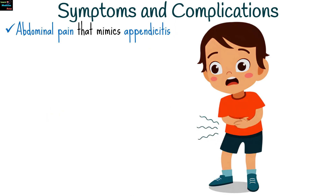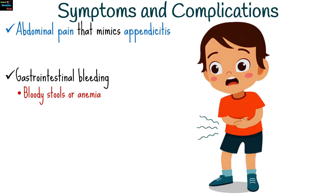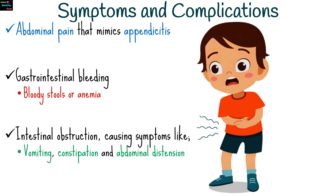While most people with Meckel's diverticulum remain asymptomatic, those who do develop symptoms might experience abdominal pain, which can mimic appendicitis; gastrointestinal bleeding, often leading to bloody stools or anemia; and intestinal obstruction, causing symptoms like vomiting, constipation, and abdominal distension.